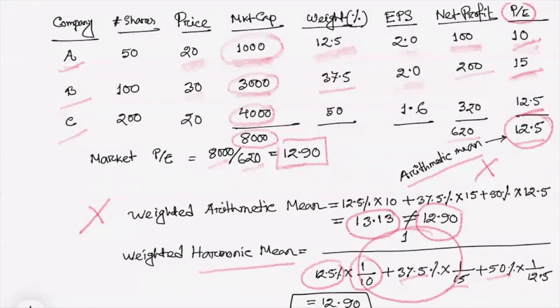So when data are represented as ratios, we need to use harmonic mean instead of general arithmetic mean or instead of geometric mean.